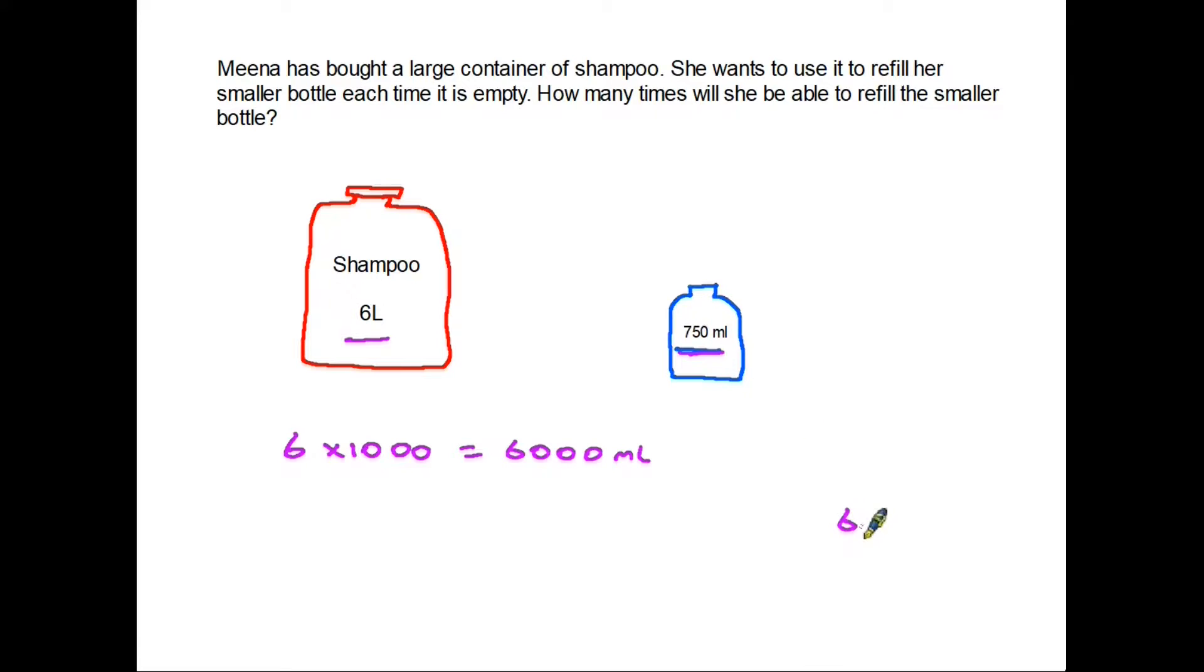To find out how many times we can refill the smaller bottle, we are going to take six thousand and divide it by 750. If we do that, we find the answer is eight. Don't worry about the long division here. This type of question you would have a calculator to help you work the last part out. What is important is that you know the conversion rate here and to multiply by a thousand.